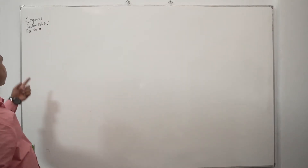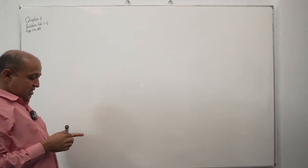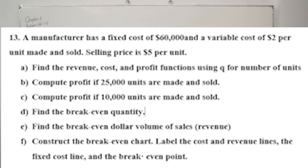Chapter 1, Problem Set 1.5, Page 64. A manufacturer has a fixed cost of $60,000 and a variable cost of $2 per unit made and sold. Selling price is $5 per unit.